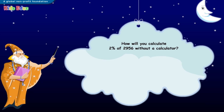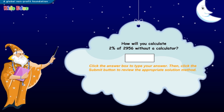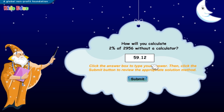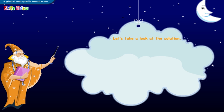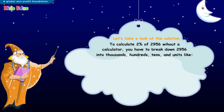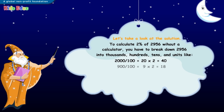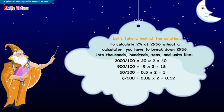How will you calculate two percent of two thousand nine hundred and fifty-six without a calculator? Click the answer box to type your answer. The answer is fifty-nine point one two. Let's take a look at the solution. To calculate two percent of two thousand nine hundred and fifty-six without a calculator, you have to break down two thousand nine hundred and fifty-six into thousands, hundreds, tens, and units. Now add forty, eighteen, one, and zero point one eight. This gives us fifty-nine point one two.